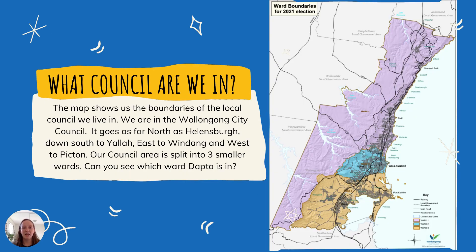So which council are we in? This map shows us the boundaries of the local council we live in. We are in the Wollongong City Council. It goes as far north as Helensburg, down south to Yala — just past Dapto — east to Windang, and west up to Picton and down the mountains that way.